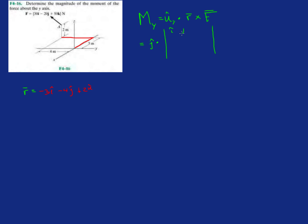So let's plug this into our determinant. So i, j, k, okay, minus 3, minus 4, and then 2. That's the distance, the r. And the force, we have 30 i, minus 20, and then 50.